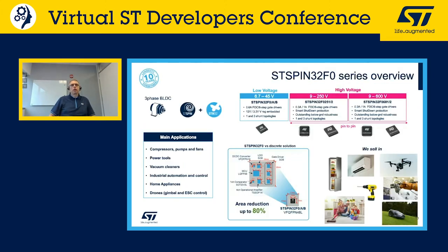Currently there are two main groups of STSPIN32F0. The low voltage group is rated up to 45V, and the high voltage group is split into two subfamilies: a 250V subfamily and a 600V subfamily. All drivers can be used in sensored or sensorless configuration, and dedicated evaluation firmware is provided for each part number.